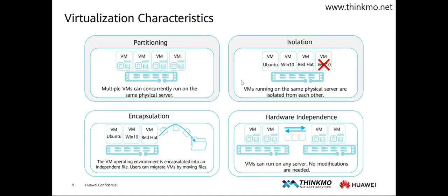A crash or failure of one virtual machine — such as an operating system failure, application crash, or driver failure — will not affect other virtual machines on the same server. Furthermore, a virus or worm within one virtual machine is also isolated from other virtual machines, just as if each virtual machine were located on a separate physical server, so they do not affect each other. To provide performance isolation, we can specify the minimum and maximum resource usage for each virtual machine to ensure that no virtual machine monopolizes all resources, leaving other virtual machines without available resources.